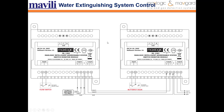For water extinguishing system control, whether the flow switch and butterfly valve are open or not can be monitored with switch monitoring modules. As shown, one switch monitoring module is connected to the flow switch and another is connected to the butterfly valve, allowing you to monitor the positions of both the butterfly valve and the flow switch.